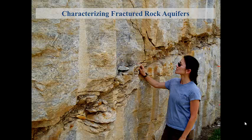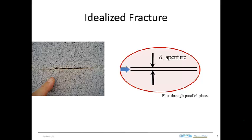Fractured rock aquifers are important worldwide, so it's important to understand the role that fractures play in hydrogeologic processes. Fractures are complicated things. Real fractures have parts that are open and parts that are in contact — you can see that the fracture walls are actually in contact. But when we think about fractures, we typically idealize them as two parallel plates held open by a certain gap or aperture. This is the idealized conceptualization of what a fracture looks like.